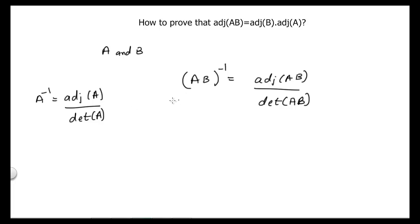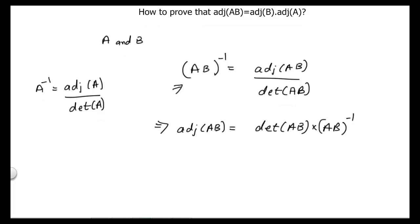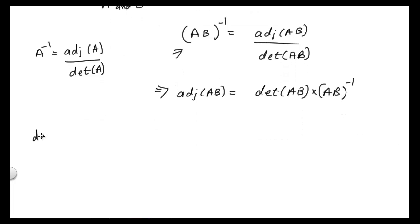In the same way, inverse of matrix AB is equal to adjoint of AB divided by determinant of AB. From here, we can write that adjoint of AB is equal to determinant of AB times AB inverse.